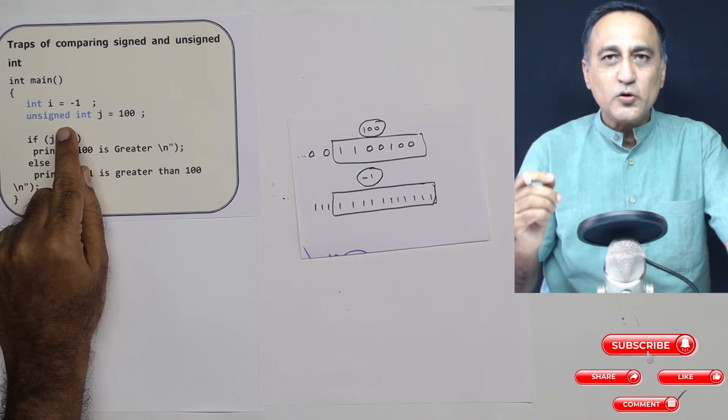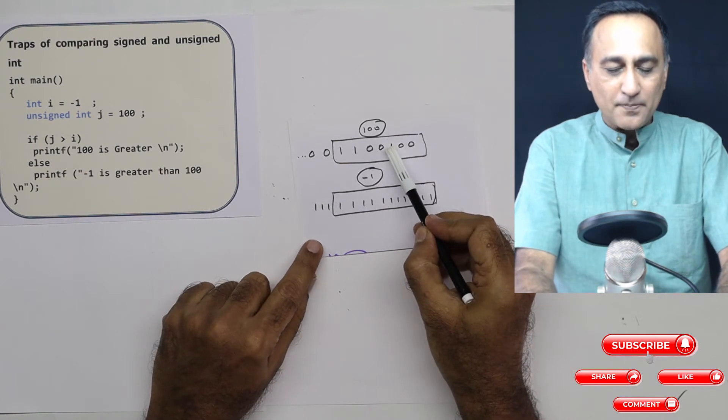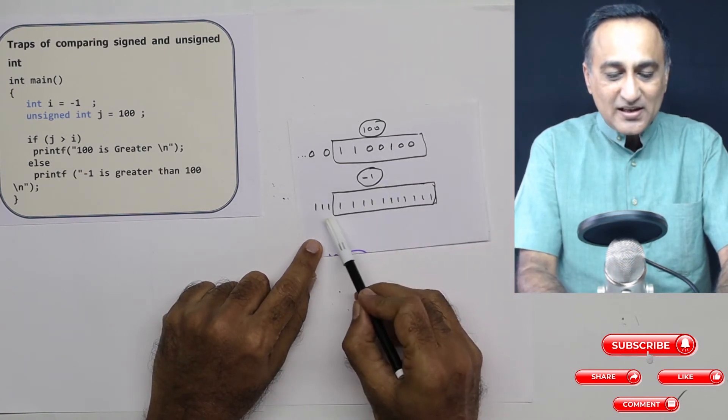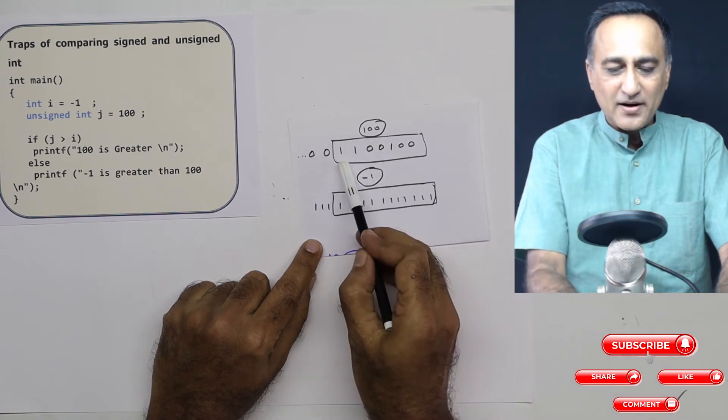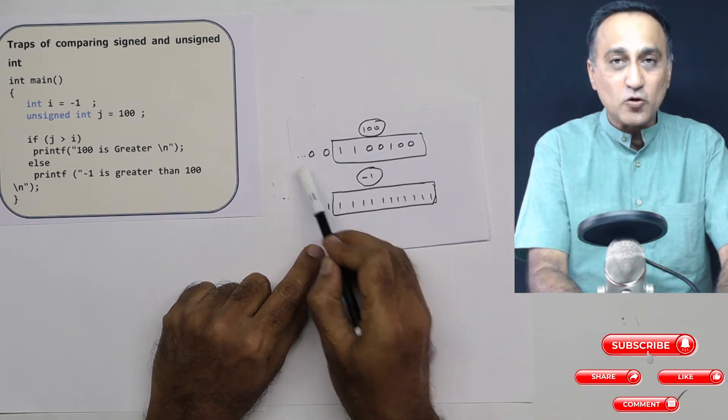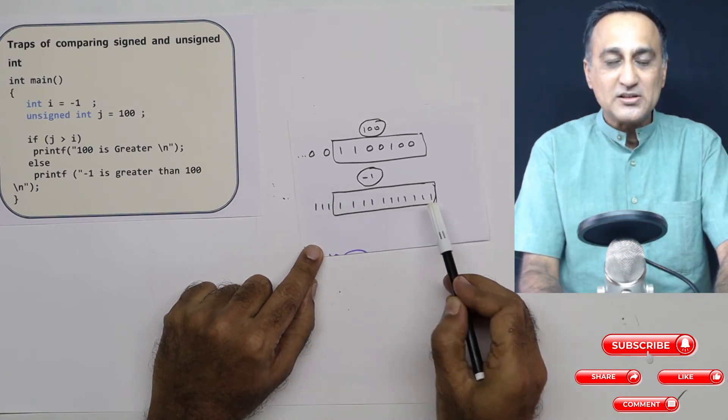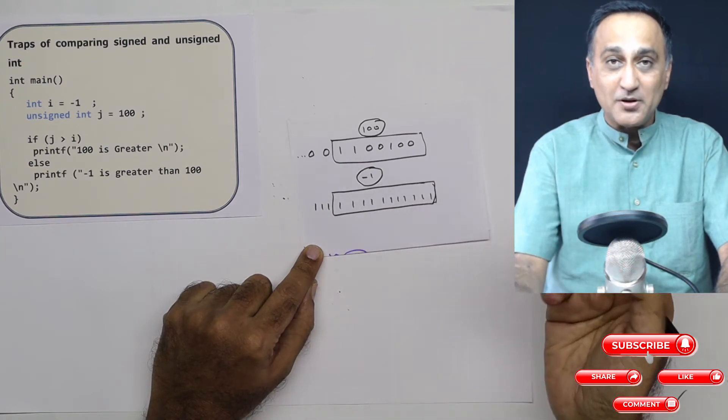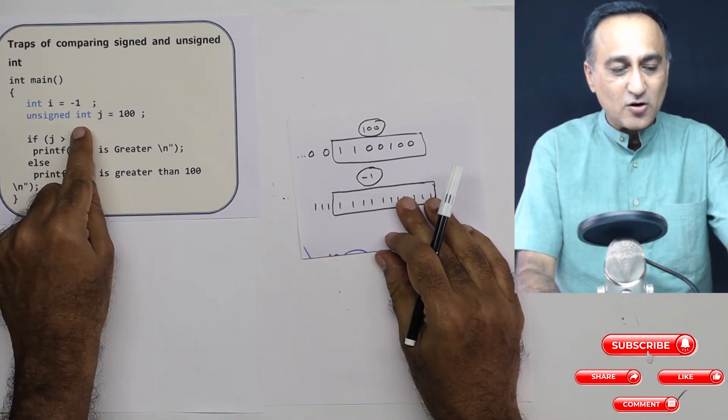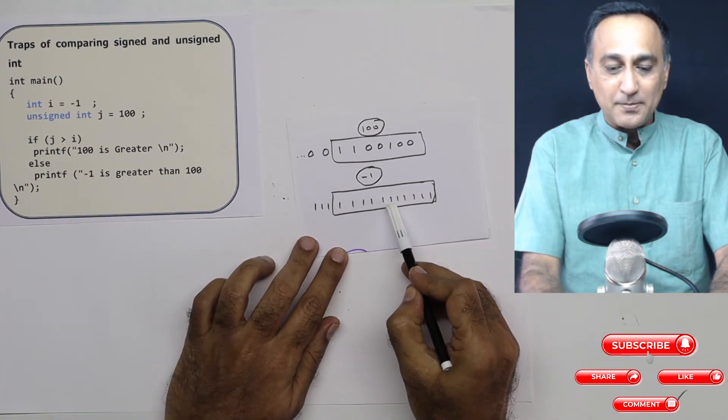Since an int gets promoted to an unsigned int, what happens now is 100 no problem. But -1 internally is stored as a series of 1's. Assume it's just a 16-bit number. For this fellow 100, after this 1, everything is going to be 0. But for this fellow, almost all the digits are going to be all 1's. Now when -1 is converted into a positive number, because in unsigned there is nothing called sign, this will turn out to be a very huge unsigned number.